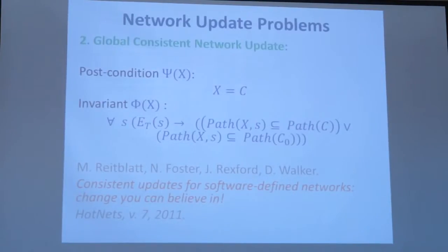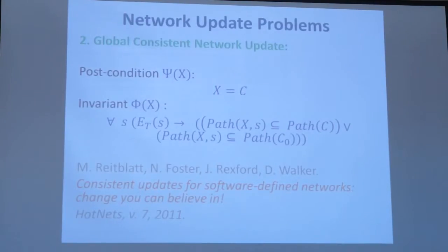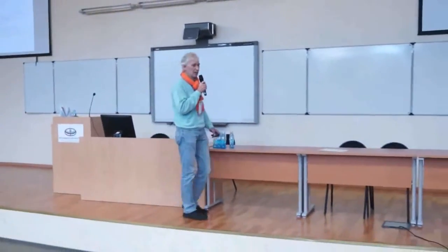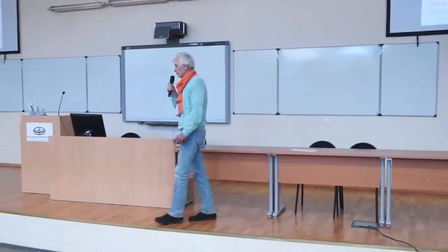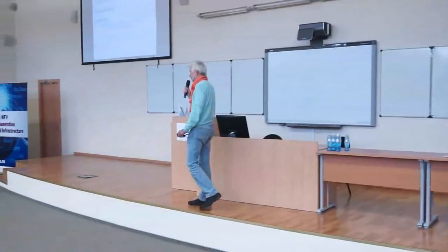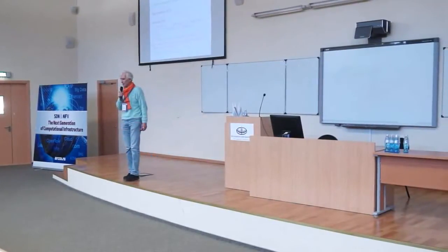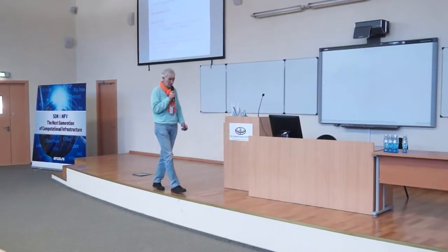The most well-known and mostly studied variant of this problem is the variant of global network update. Given the initial configuration and the target configuration, we must change the initial configuration in such a way that in the course of this change, the intermediate configurations contain only those paths that are available in one of these two configurations—either in the source or in the target. This problem has been studied successfully in many papers, and I will speak about one possible solution to it later.